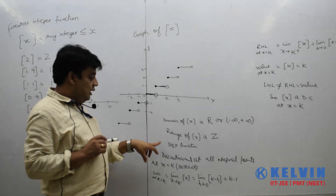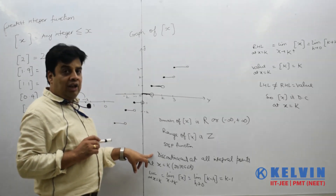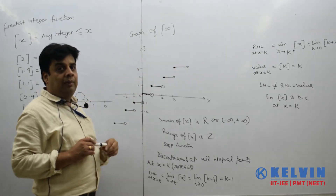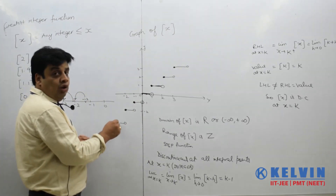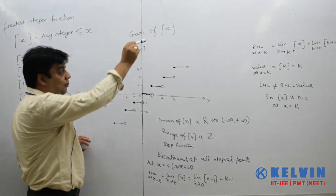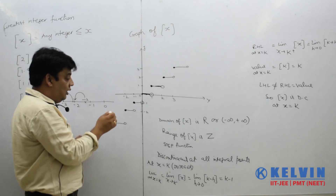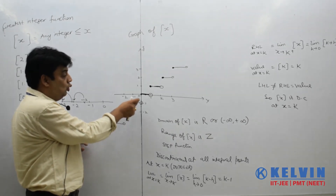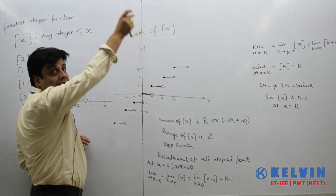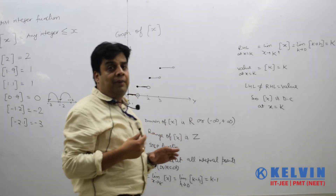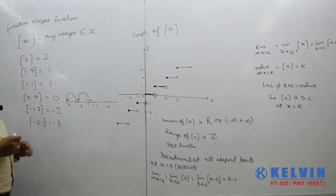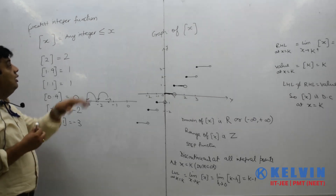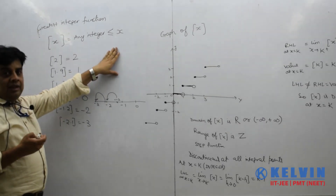So we have discussed domain, range, the step function property, and the idea of continuity and discontinuity through both the graph and the limit method. One more thing to note: this is a non-periodic function. It seems to be repeating, but it is not, because the value keeps changing: minus 3, minus 2, minus 1, 0, 1. Since the function is non-repeating, it is a non-periodic function.